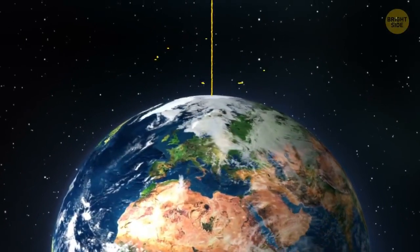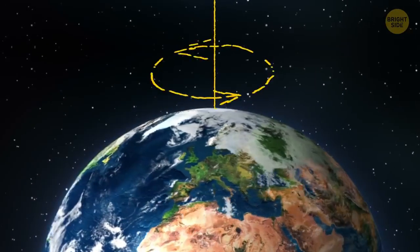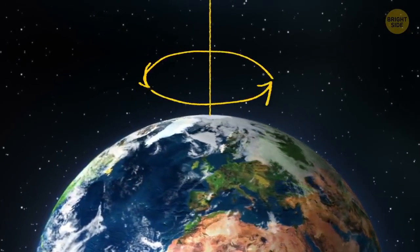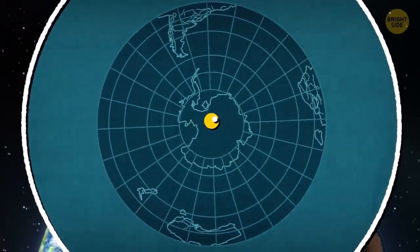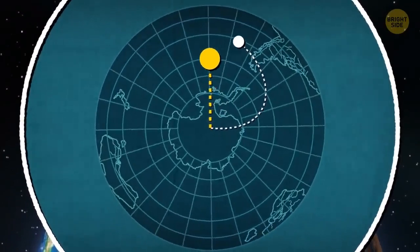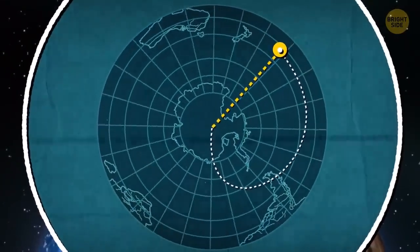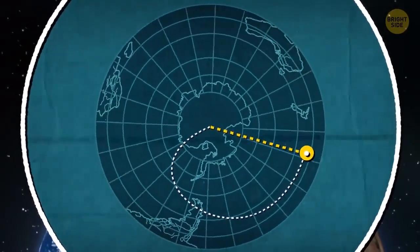And all the moving objects on it will be acted upon by Coriolis force, deviating from their course. As a result, the objects on the Earth's surface don't move straight on but deviate in clockwise order in the northern hemisphere and counterclockwise in the southern.